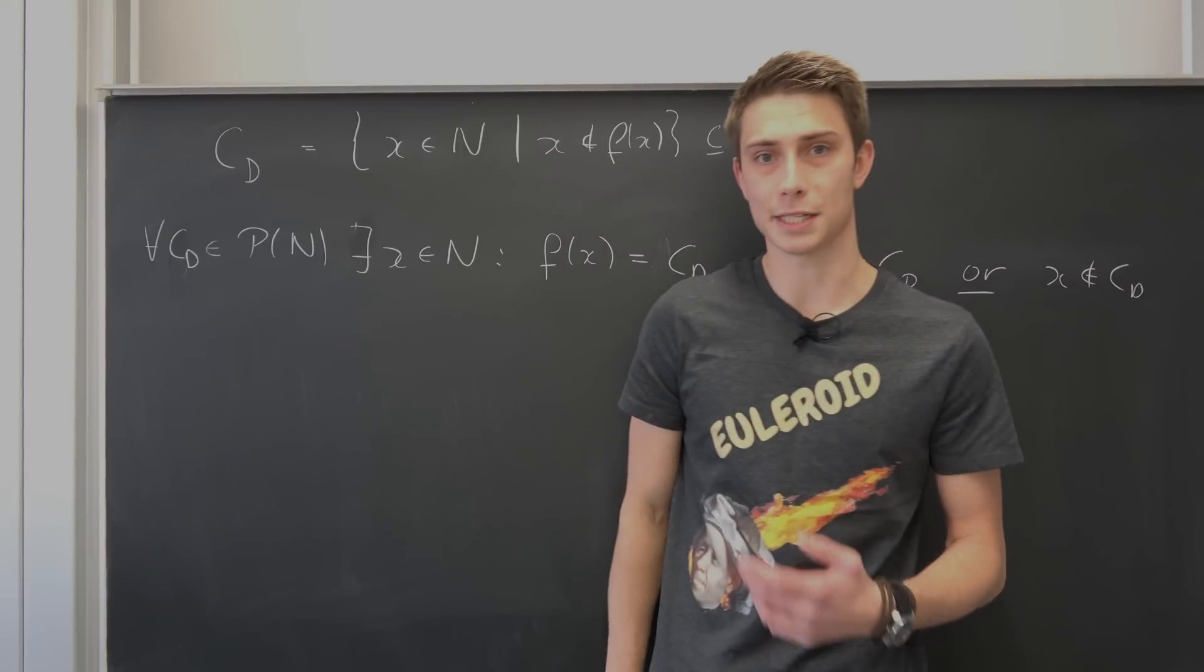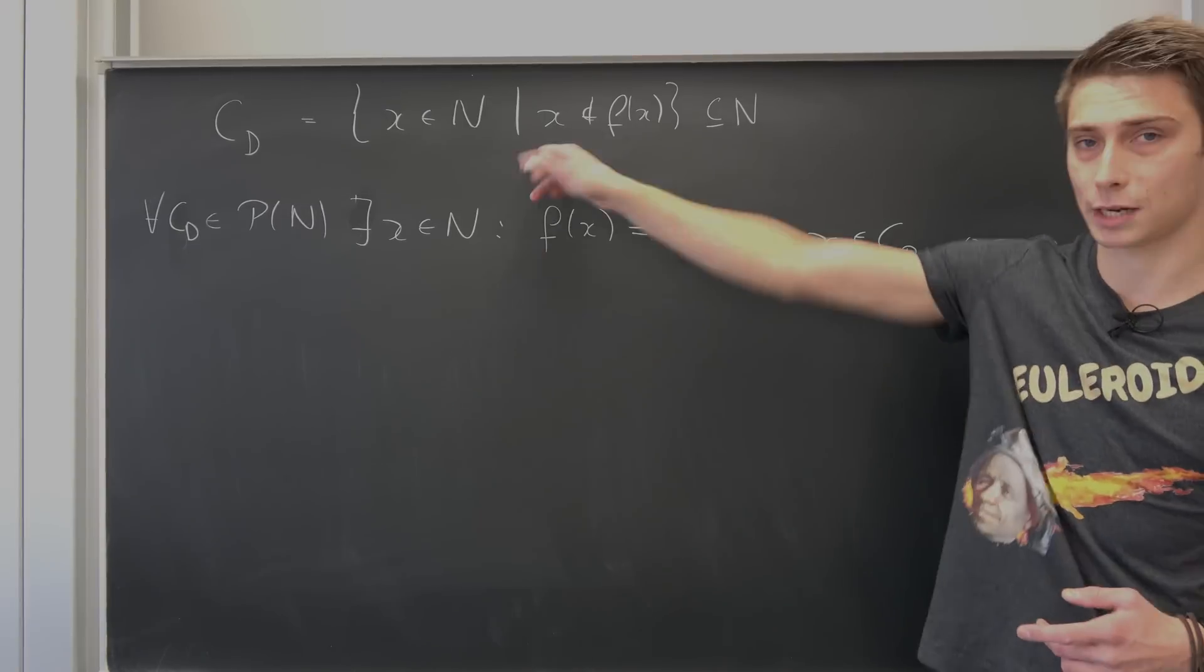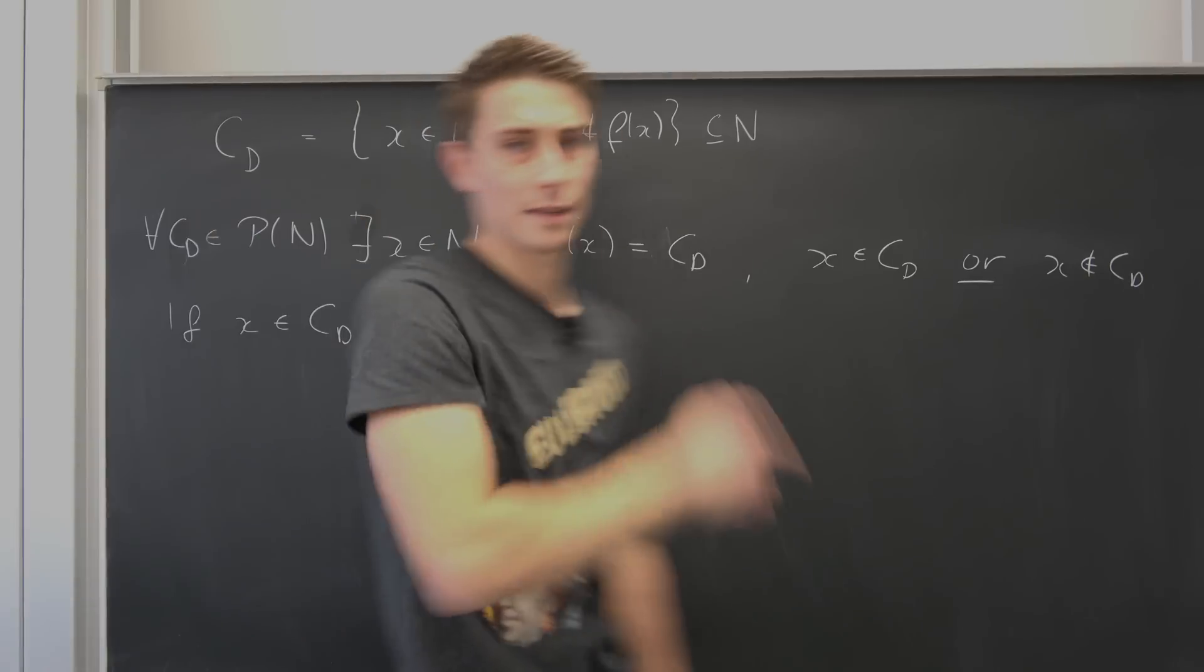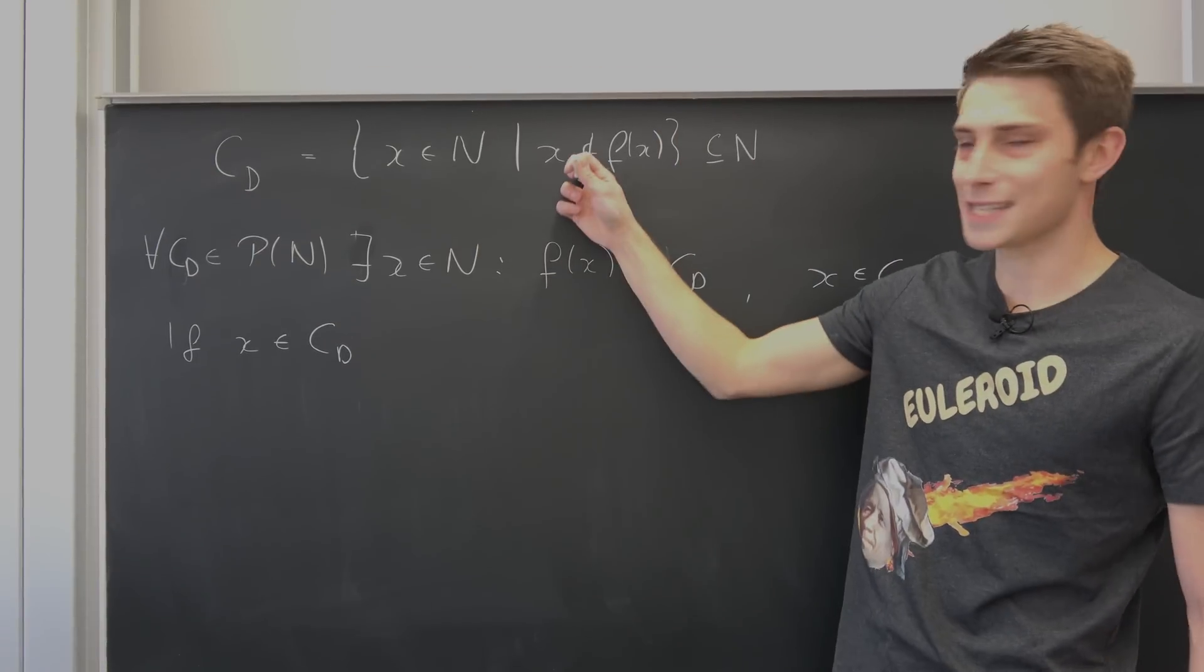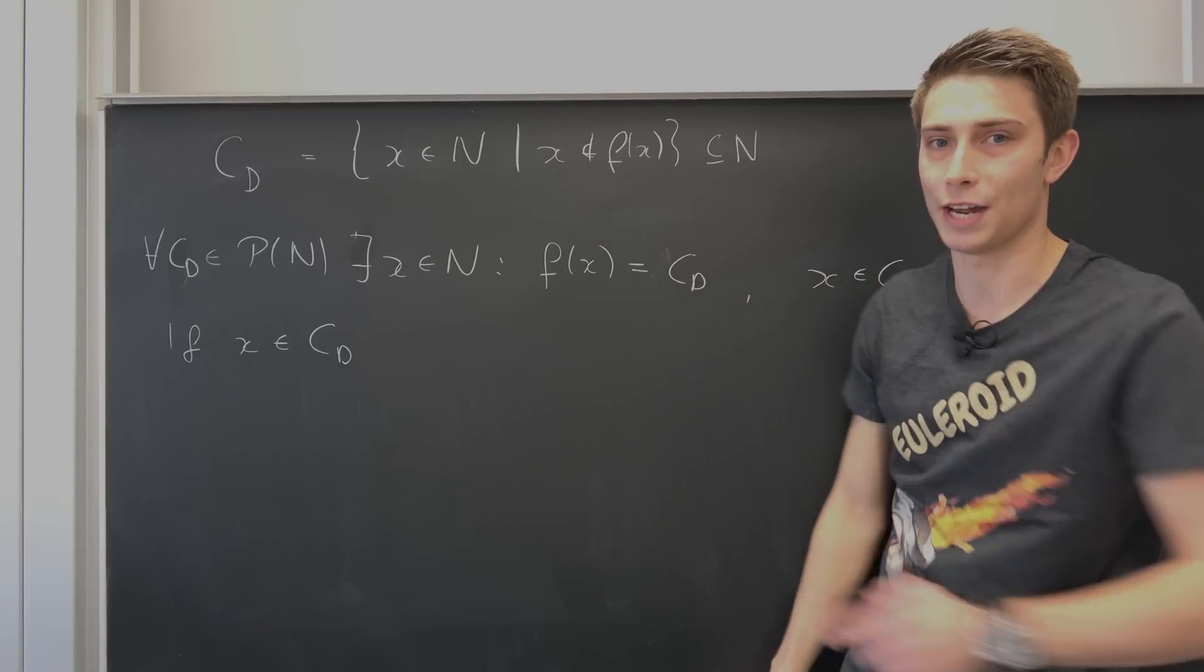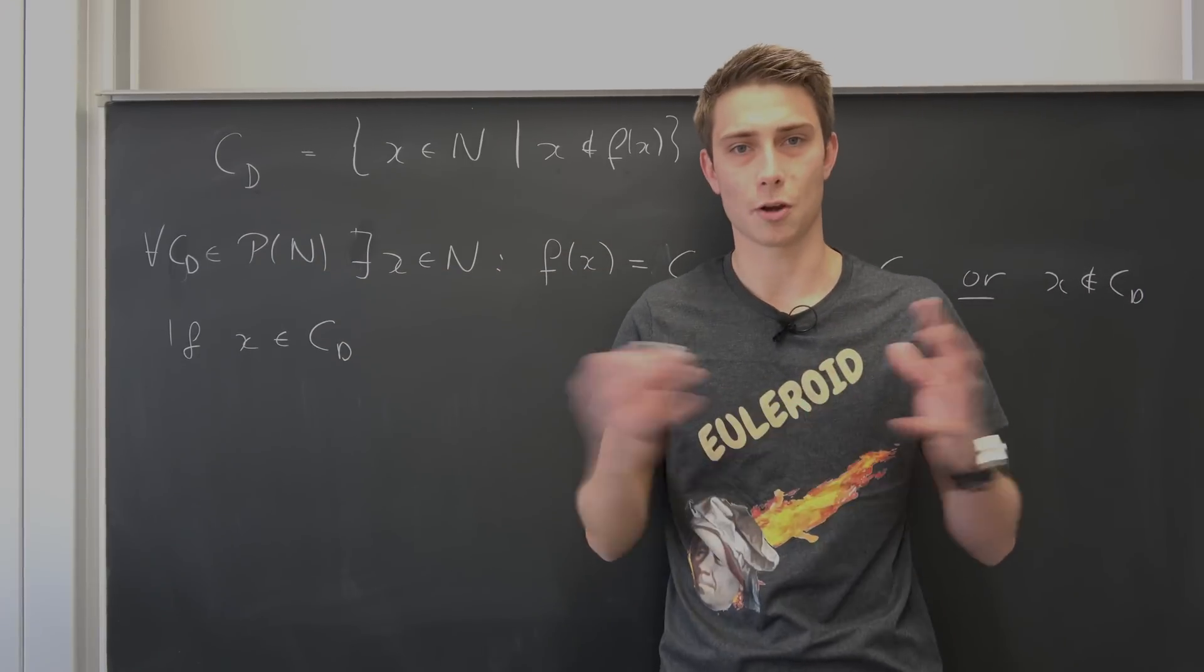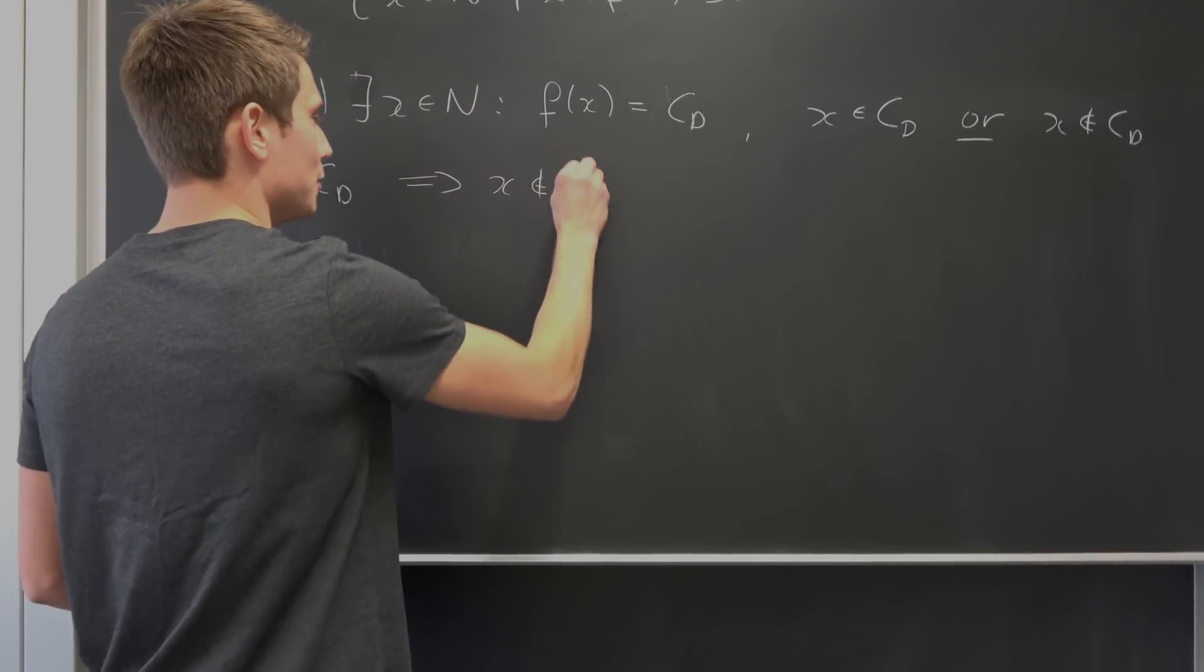We are still striving for contradiction to find out that this f is not a surjection at all. So why not check both cases? Let's assume that x is element of our Cantor diagonal set. If x is element of CD, what does that mean? Then it means that this x is element of CD. But by this law it also means that our x is not in the image of f of x, meaning it's also not element of CD. And that's the real mind blow which was so messed up when I first started university. So this immediately implies that x is not element of CD.